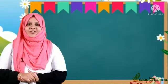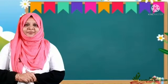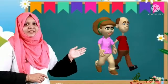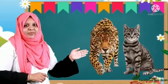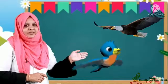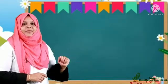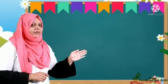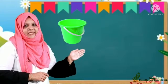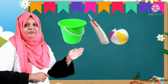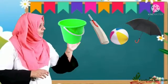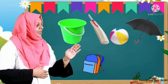Now let's say the living things and non-living things once again. Living things are humans, animals, birds, and trees. Non-living things are bucket, bat, board, umbrella, bag, chair, fan, etc.